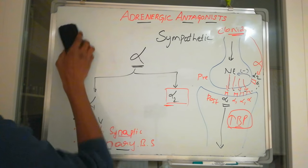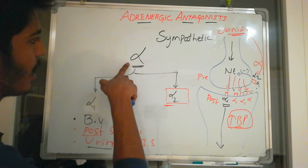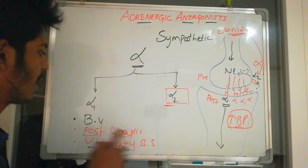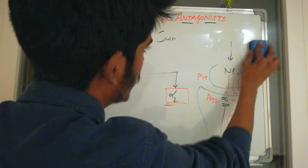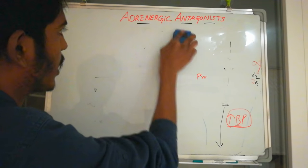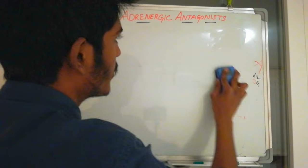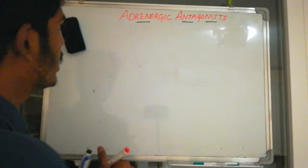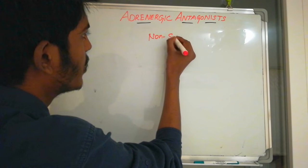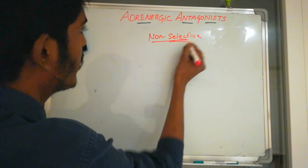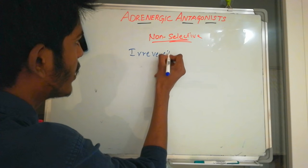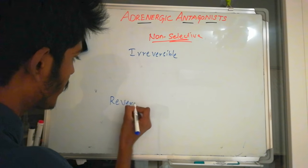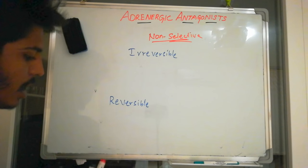Now let's look at the drug classes. We can have drugs that block both alpha 1 and alpha 2 — called non-selective alpha blockers. There are also drugs that block only alpha 1 or only alpha 2. Non-selective alpha blockers are divided into two groups: irreversible alpha blockers and reversible alpha blockers.